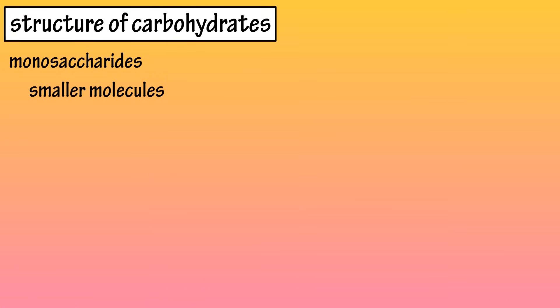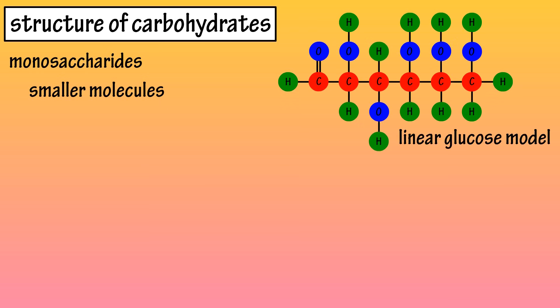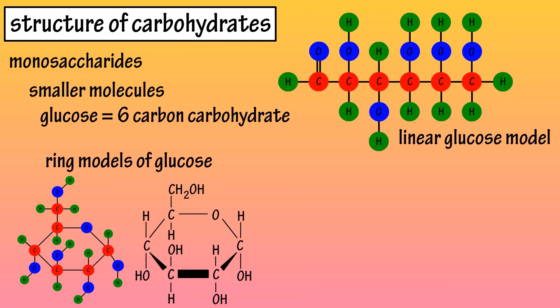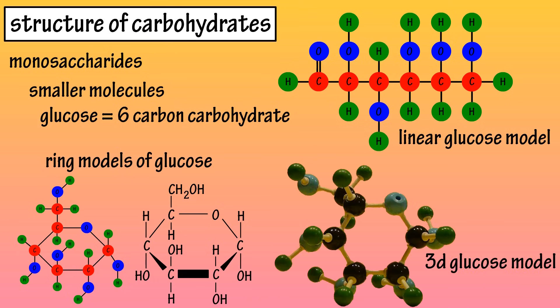Monosaccharides are smaller molecules, of which the most important is glucose. Glucose is a 6 carbon carbohydrate, and when it is dissolved in water, it will form a ring, as represented in this ring model. A three-dimensional model of glucose looks something like this. I've shown you three different models here, but keep in mind that these models all represent the same molecule.